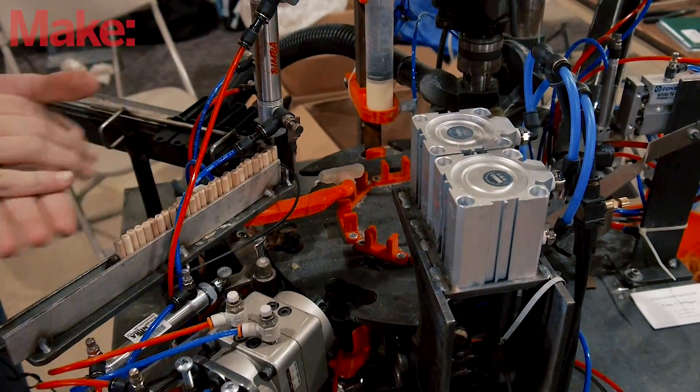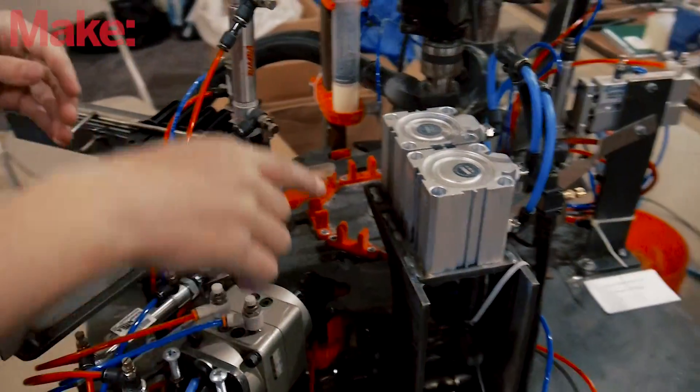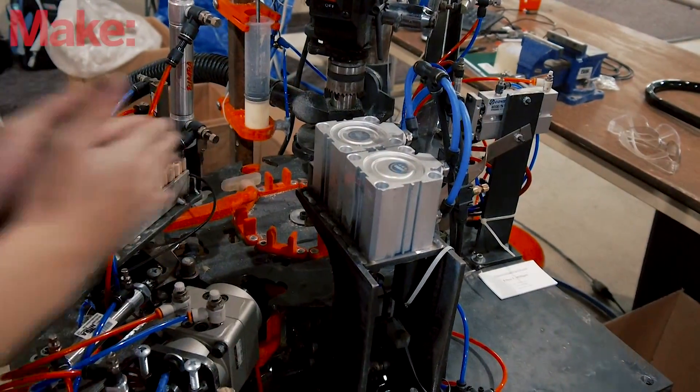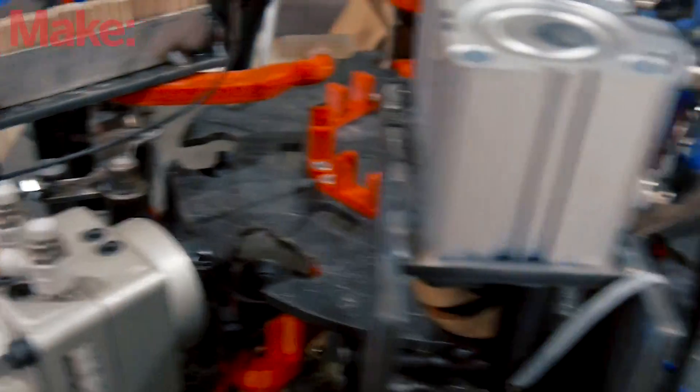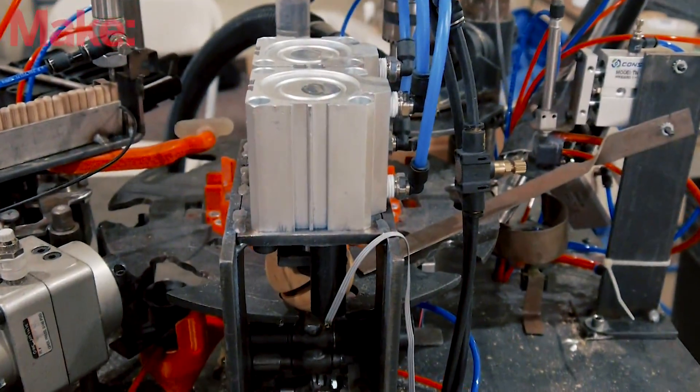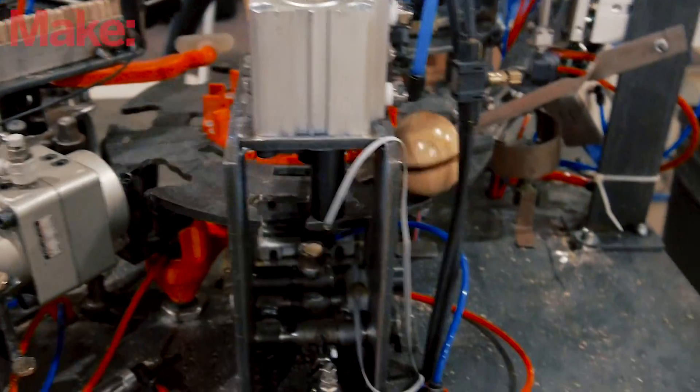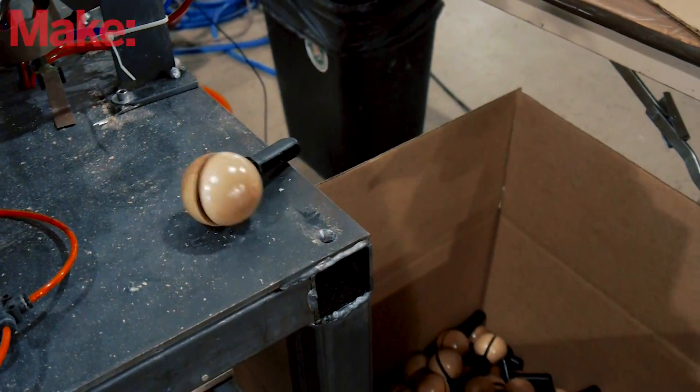Then once that is down, it moves over to this station which then presses the two together. It doesn't press them all the way because it doesn't have enough force, which is what this next station is, which it moves on and presses them together with about 300 pounds of force. Then the next station is just to kick it off, and there you go, that's the whole thing.